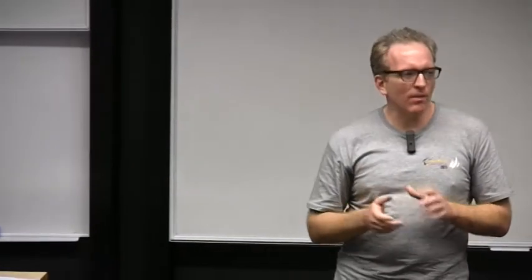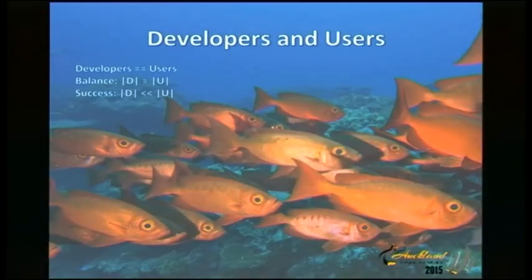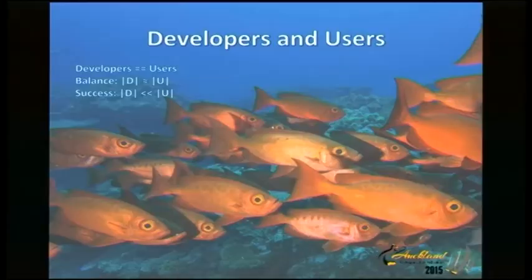As you get more users and they have ideas about what should work, as they find bugs, as they have new requests, you also grow your developer base — some users turn into developers. It's a manageable relationship. And then something really bad happens: you have success. When you have success and people start using your software en masse, you suddenly find the number of users is really big compared to the number of developers. That's the moment where the topic of this talk sets in: how do you maintain momentum?